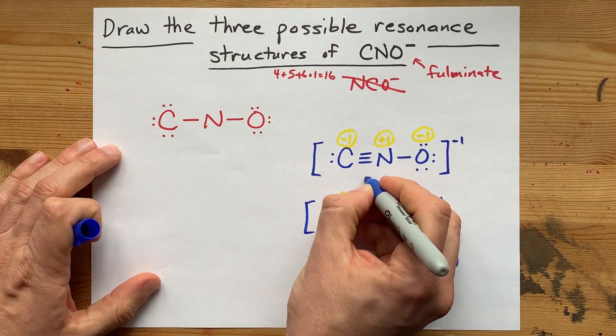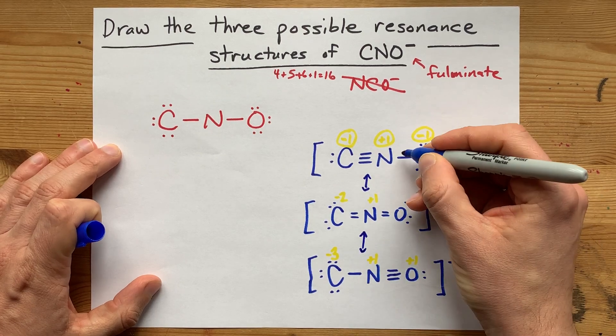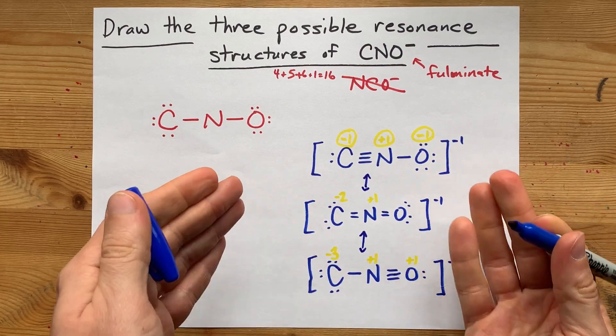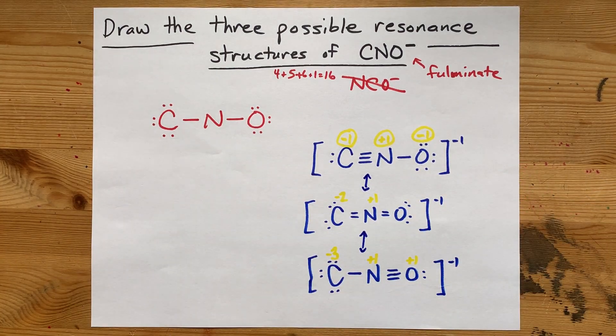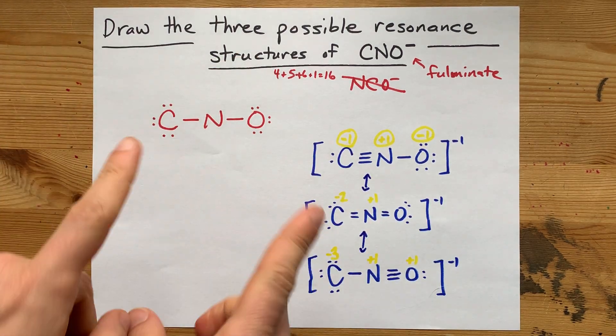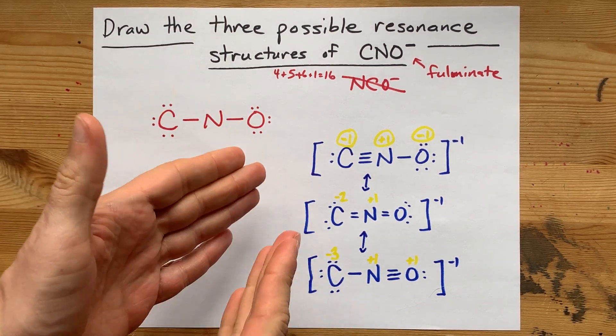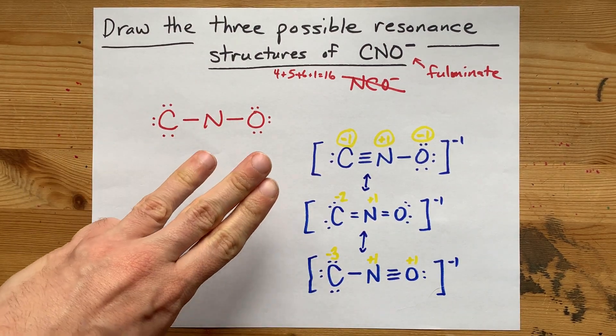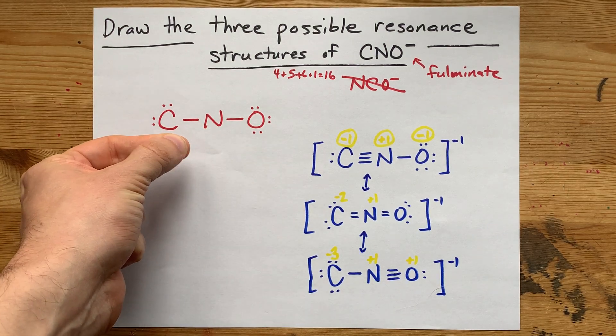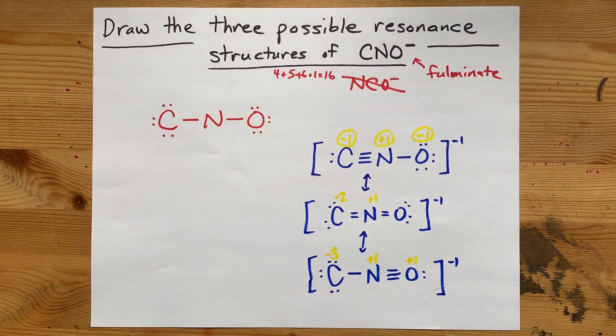The last thing I want to do is draw in these resonance arrows. This is how you link these structures together to show that they're all the same. It's just a redistribution of electrons around the ion. Well, I'm kind of sorry that that took seven minutes, but I had to do it that way to explain what I was doing at every point. And there you have it. Three valid resonance structures for the fulminate ion, including formal charges. Thanks for being with me, and best of luck.